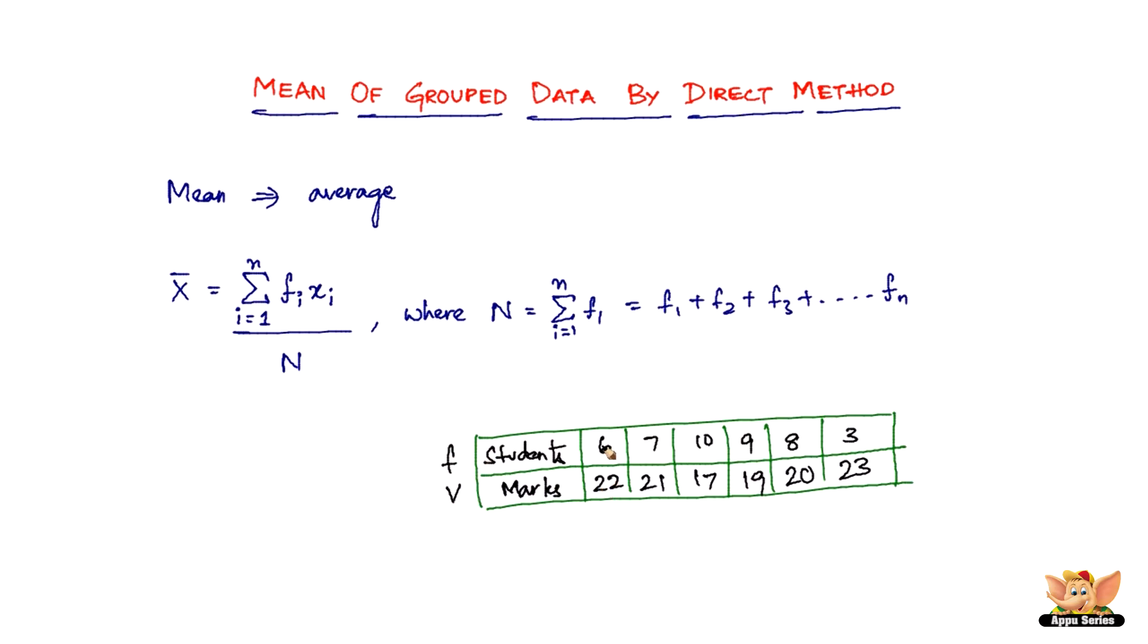How many of them got 22 marks, how many of them got 21 marks? So 6 of them got 22 marks, 7 of them got 21 marks, 10 of them got 17 marks. This is the frequency.